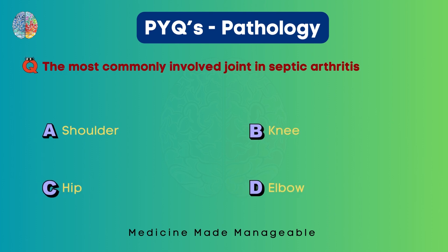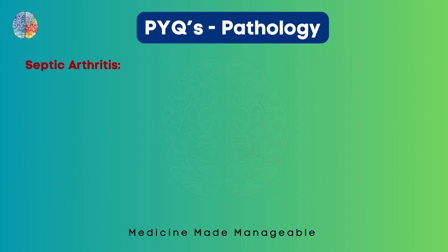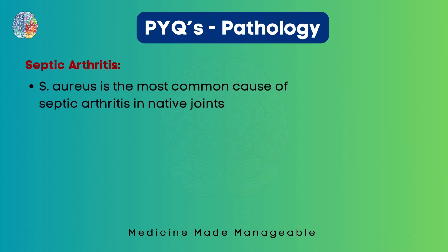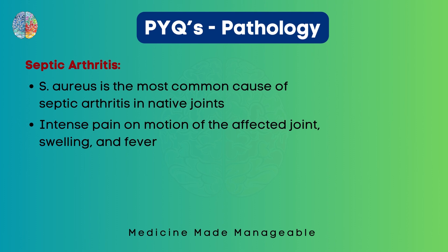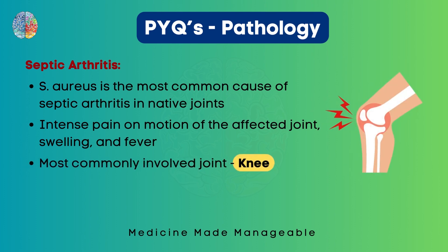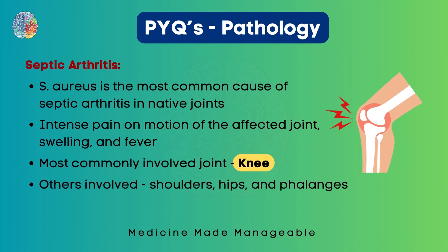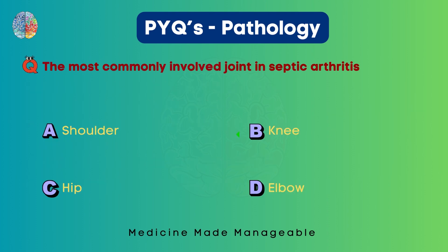The most commonly involved joint in septic arthritis is shoulder, knee, hip, or elbow. The most common cause of septic arthritis is Staph aureus, with intense pain on joint motion, swelling, and fever. The most commonly involved joint is the knee, though shoulders, hips, and phalanges are also involved. Shoulders and hips were included as distractors in the options. The correct answer is option B.